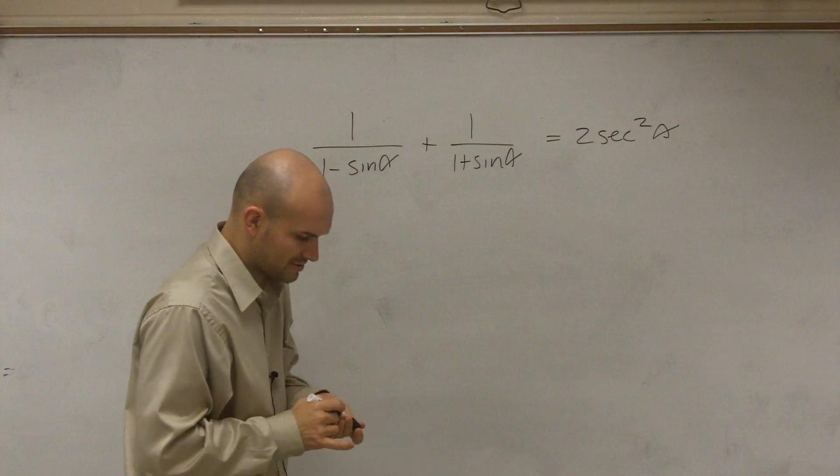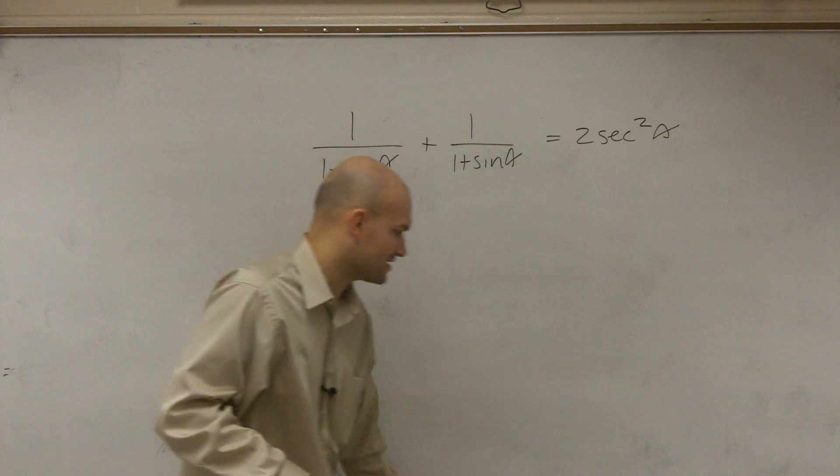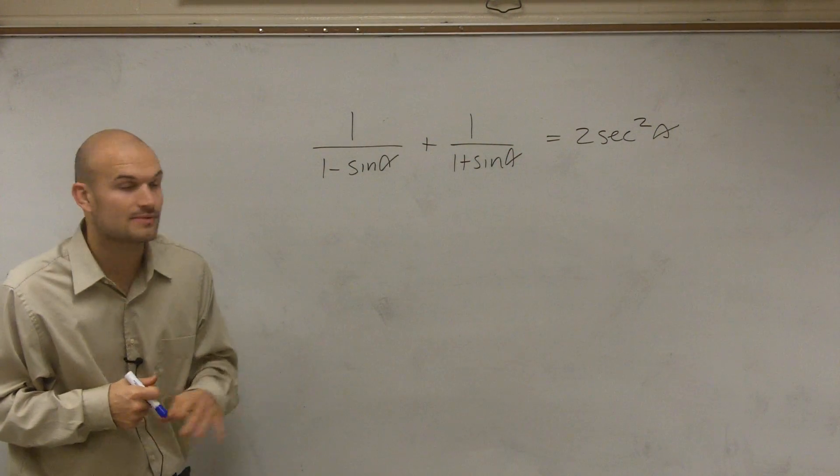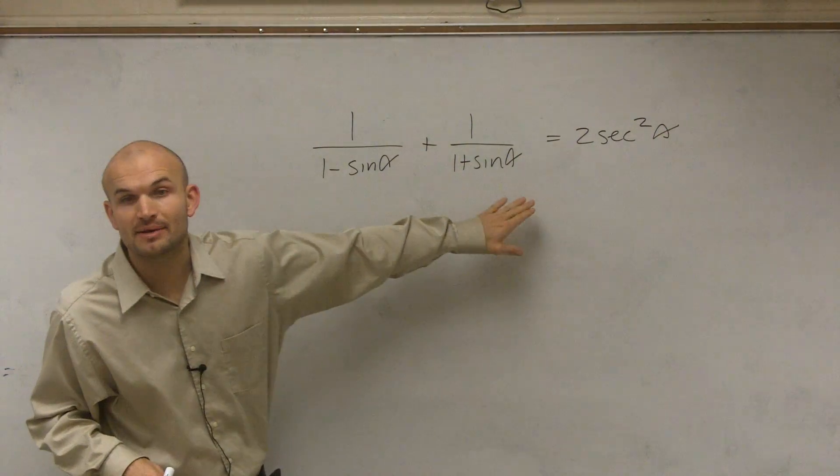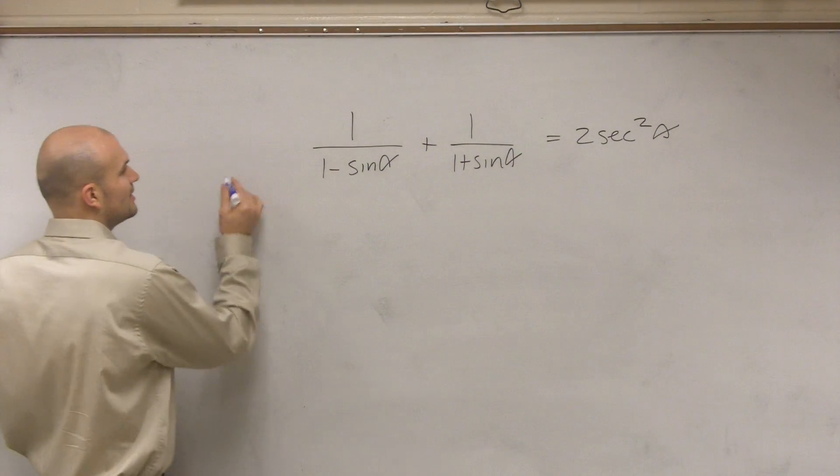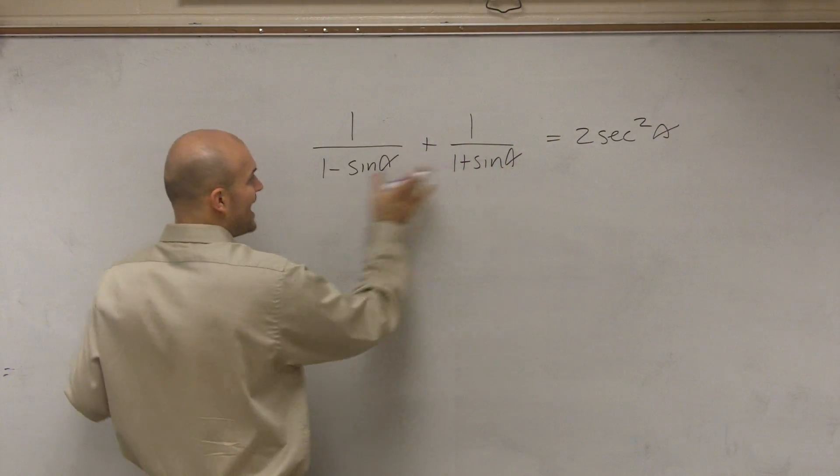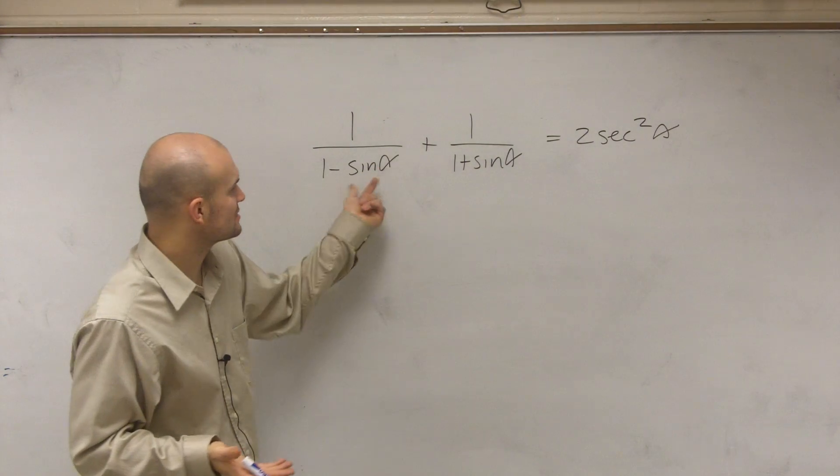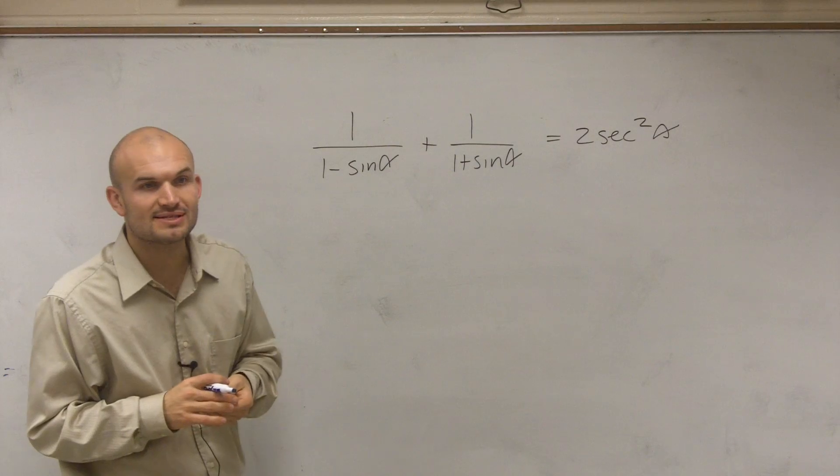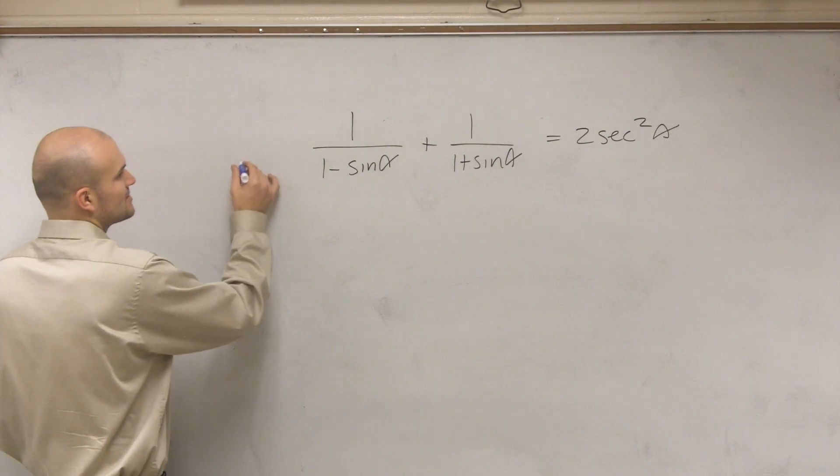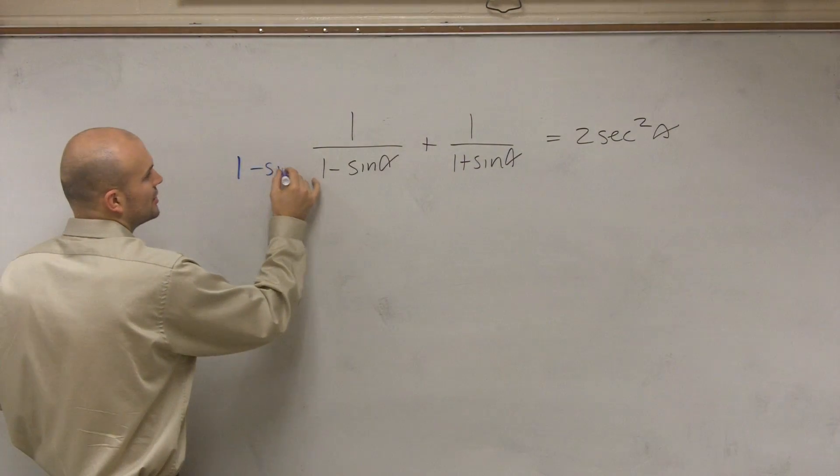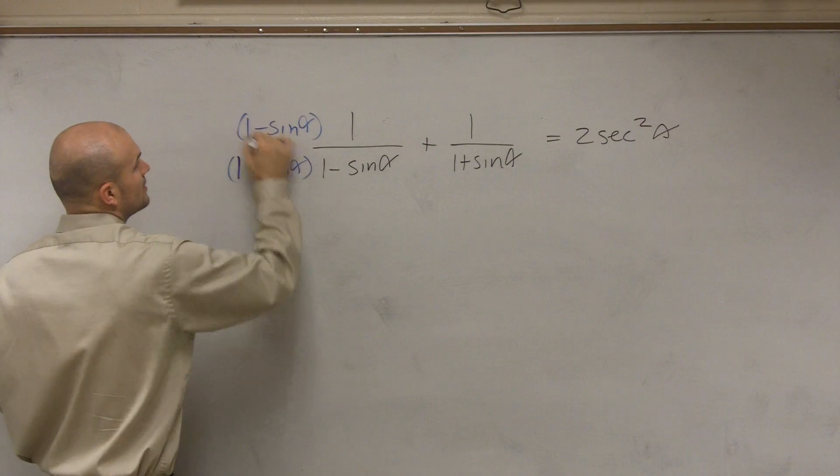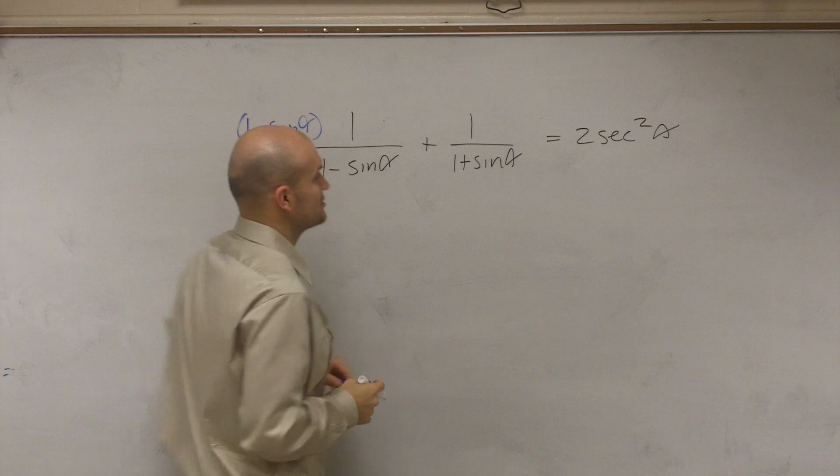So what I have here is I have two fractions. And when adding fractions, we need to remember that we need to make sure we have common denominators. So what I'm going to look over here is to add these up, I need to make sure I have a common denominator. And since this is 1 minus sine of theta and then 1 plus sine of theta, to get common denominators, I'm going to multiply by the other denominator. Make sure you multiply on the top and the bottom to make sure you have equivalent fractions.